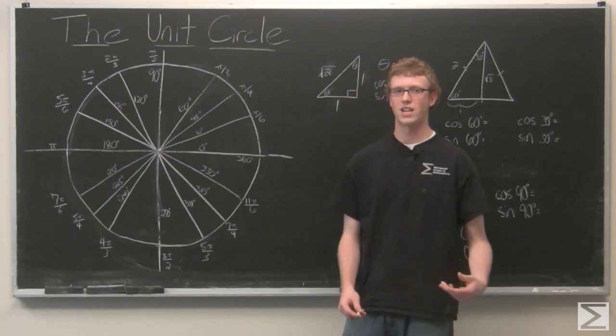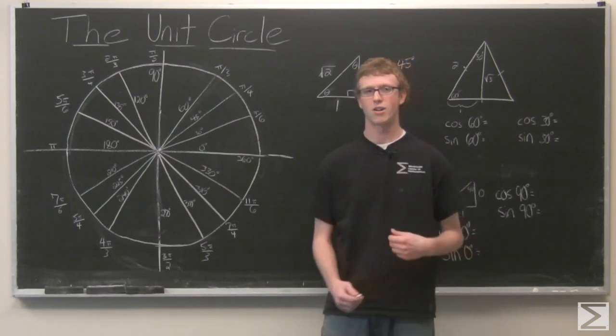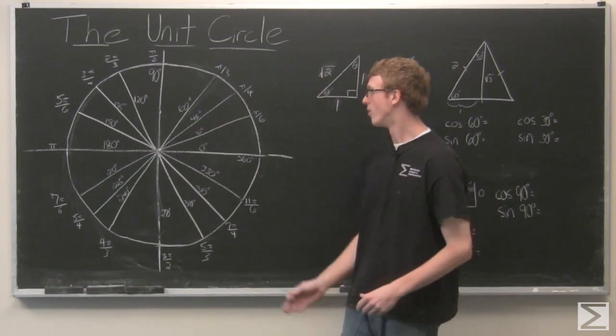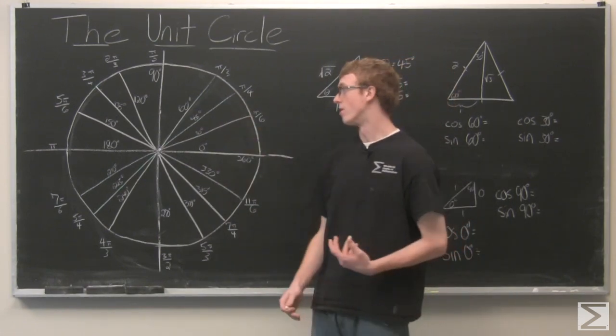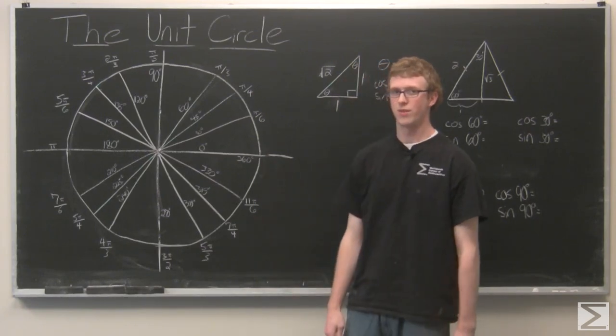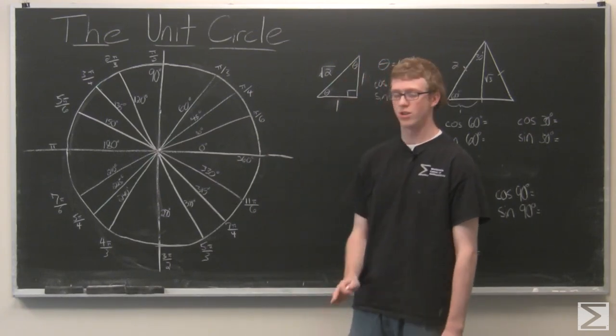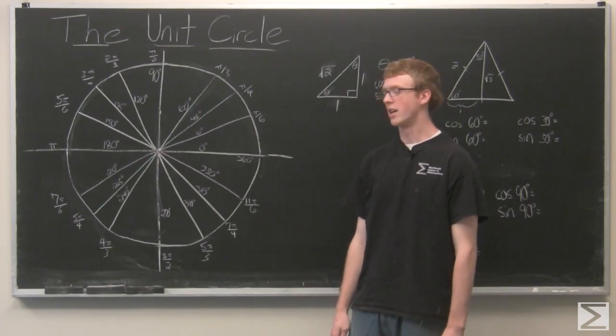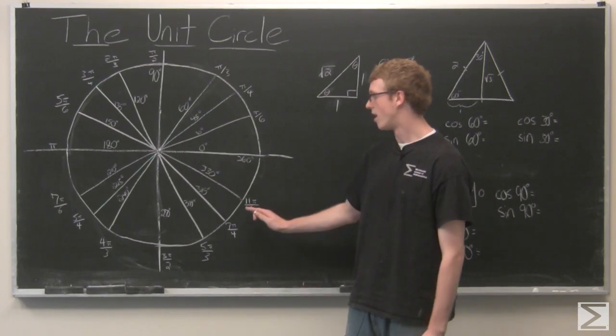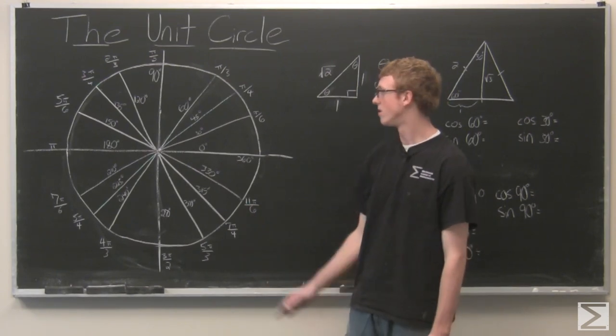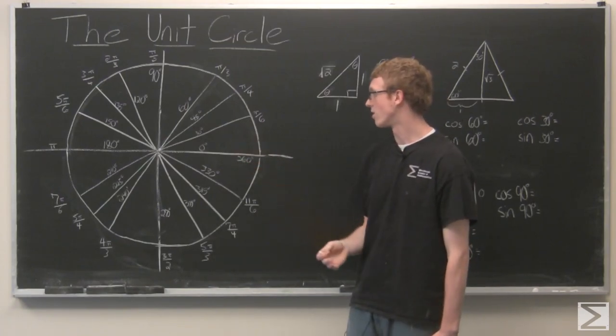So in the last video we took a look at arc length and wanted to measure a circle which is 360 degrees in terms of radians which is a different unit, and we found out that a full circle was 2 pi radians. So what I've done here is broken up the unit circle into the important angles that are measured and we're gonna find the values of each of these trig functions at those angles.